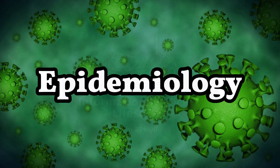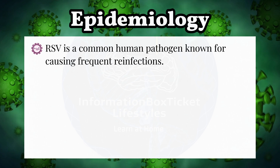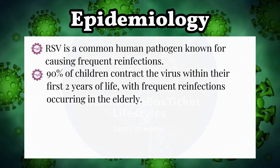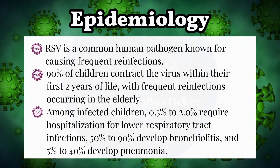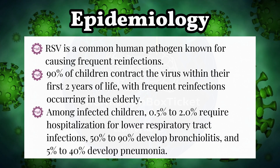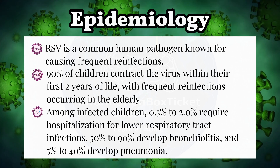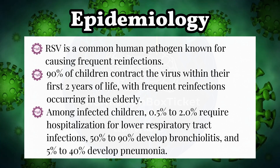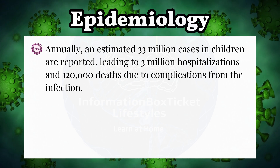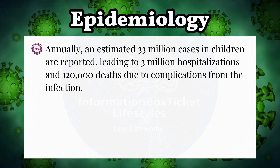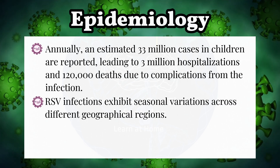Epidemiology of Respiratory Syncytial Virus (RSV). RSV is a common human pathogen known for causing frequent reinfections. 90% of children contract the virus within their first two years of life, with frequent reinfections occurring in the elderly. Among infected children, 0.5% to 2.0% require hospitalization for lower respiratory tract infections, 50% to 90% develop bronchiolitis, and 5% to 40% develop pneumonia. Annually, an estimated 33 million cases in children are reported, leading to 3 million hospitalizations and 120,000 deaths. RSV infections exhibit seasonal variations across different geographical regions.